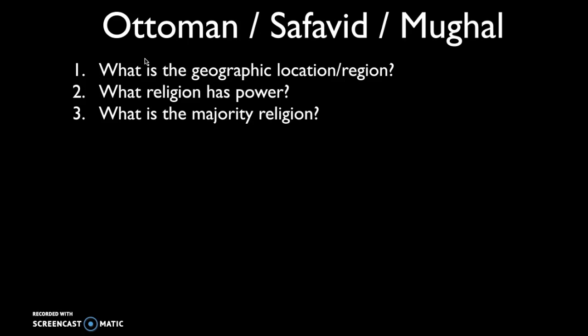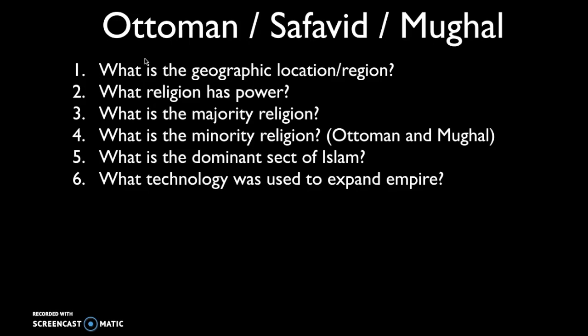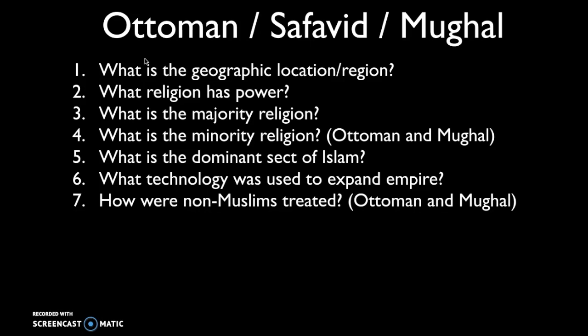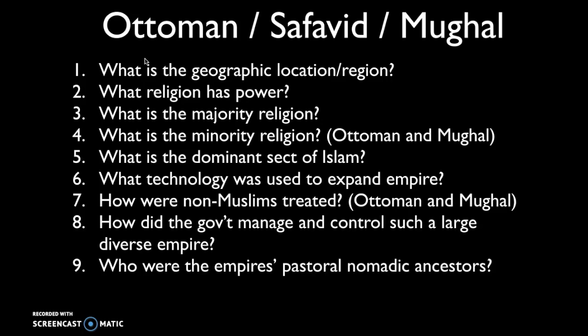Additional Venn diagram questions include: what is the minority religion in the Ottoman and Mughal empires (the Safavids are overwhelmingly Muslim so there is essentially no minority religion); what is the dominant sect of Islam — Sunni or Shia; what technology was used to expand the empire; how were non-Muslims in the Ottoman and Mughal empires treated; how did the government administer such a large and diverse empire; and who were the empire's pastoral nomadic ancestors?